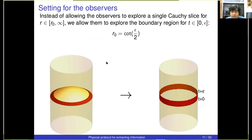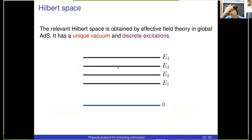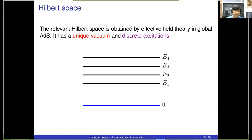A question arises: is the uniqueness of the vacuum an assumption? No — uniqueness of the vacuum is not an assumption; it's something that comes out when you quantize fields. This is just the fact that if you quantize fields inside a box you'll get a vacuum and then excitations on top of that which are discretely spaced. I'm just doing effective field theory about global Anti-de Sitter space — I open Birrell and Davies, I learn how to quantize fields about global AdS, and that gives me the spectrum. There is no assumption beyond saying that effective field theory about global AdS is valid.